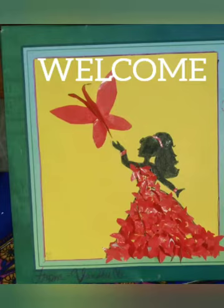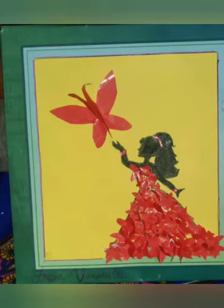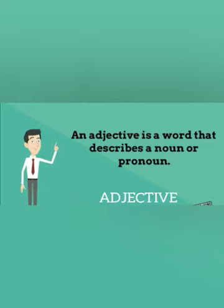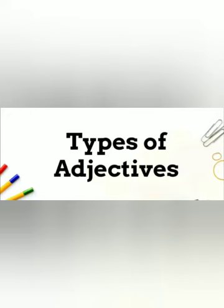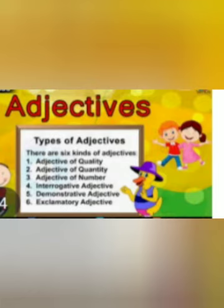A very warm welcome to all my lovely audience. In my previous video, I discussed about an adjective. An adjective is a word that describes a noun or pronoun. Now we are going to learn about the types of the adjective. There are six types of the adjective.